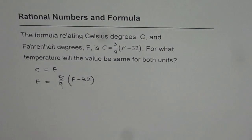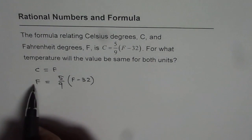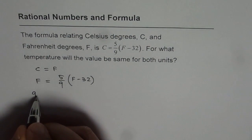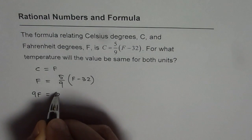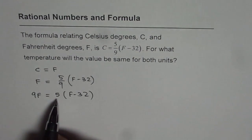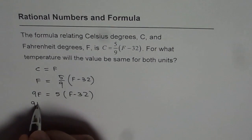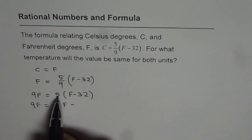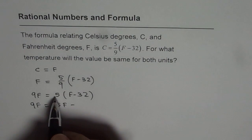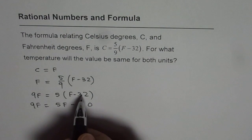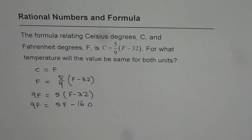Now let us solve this equation. We can multiply by 9 to get rid of the fraction, giving us 9F equals 5 times (F minus 32). Applying the distributive property, we get 9F equals 5F minus 5 times 32. Since 5 times 32 is 160, we have 9F equals 5F minus 160.